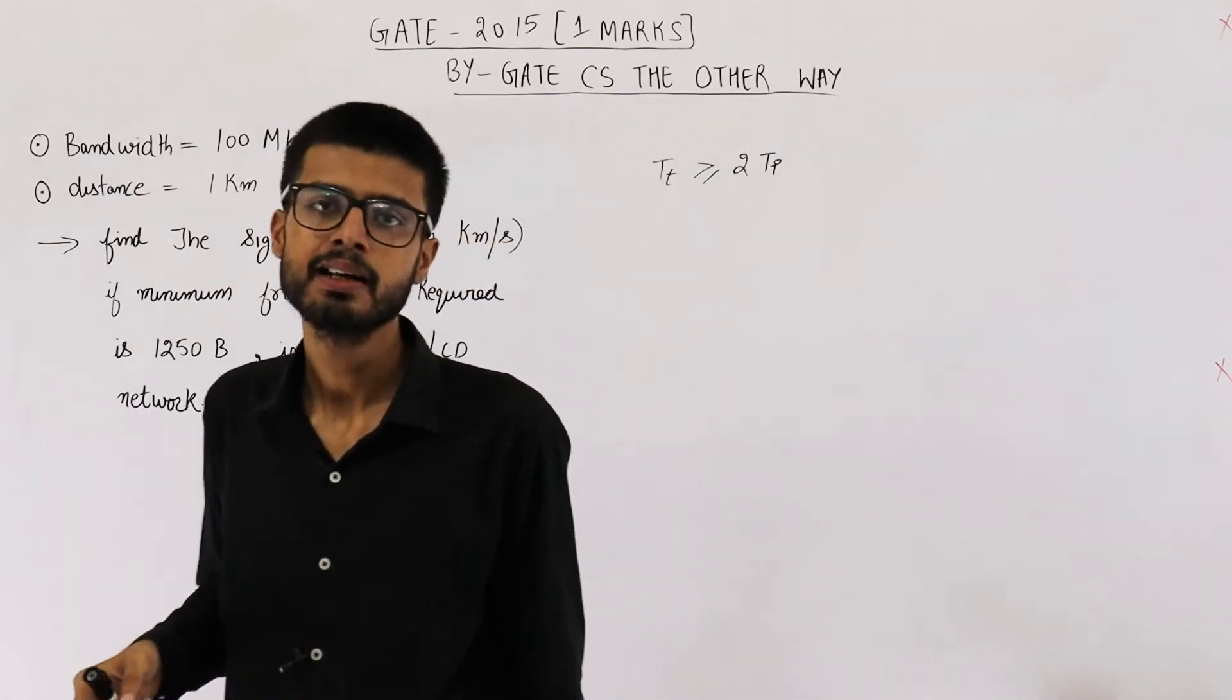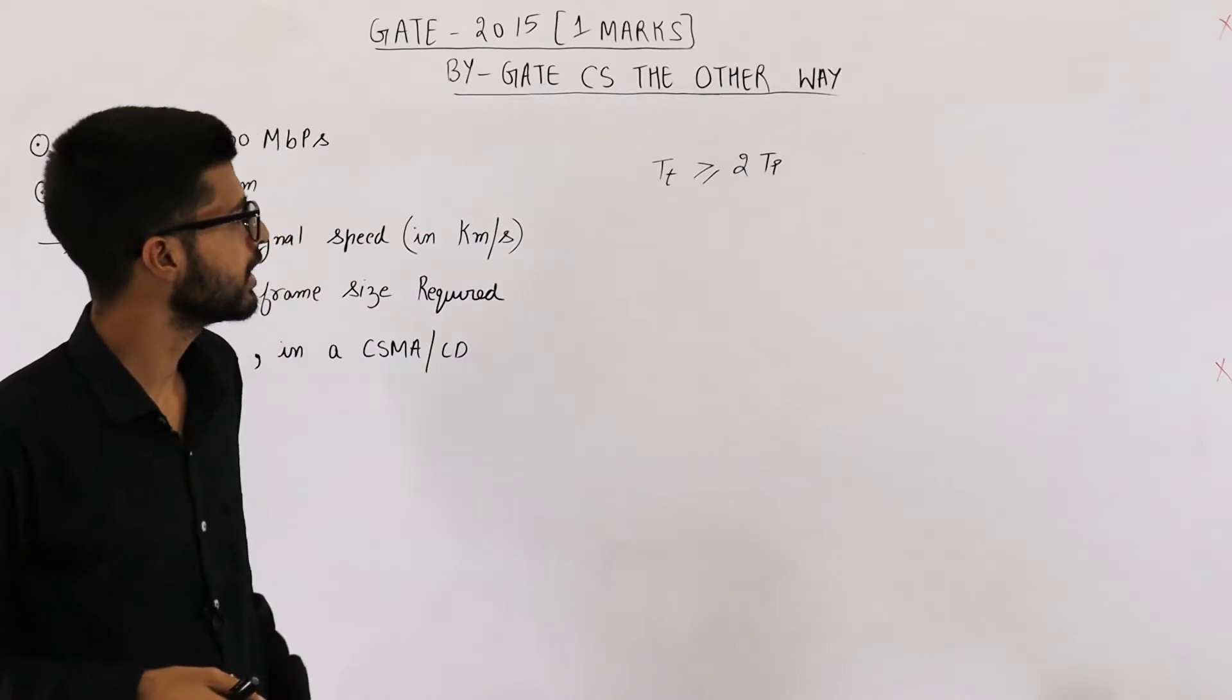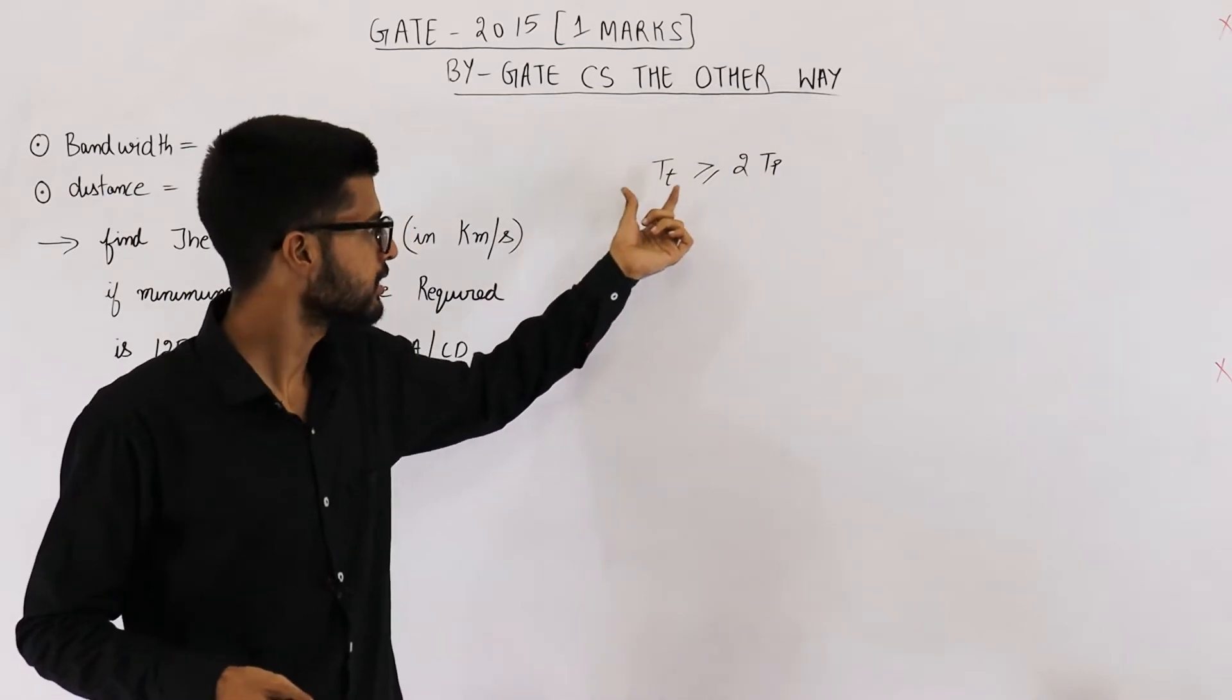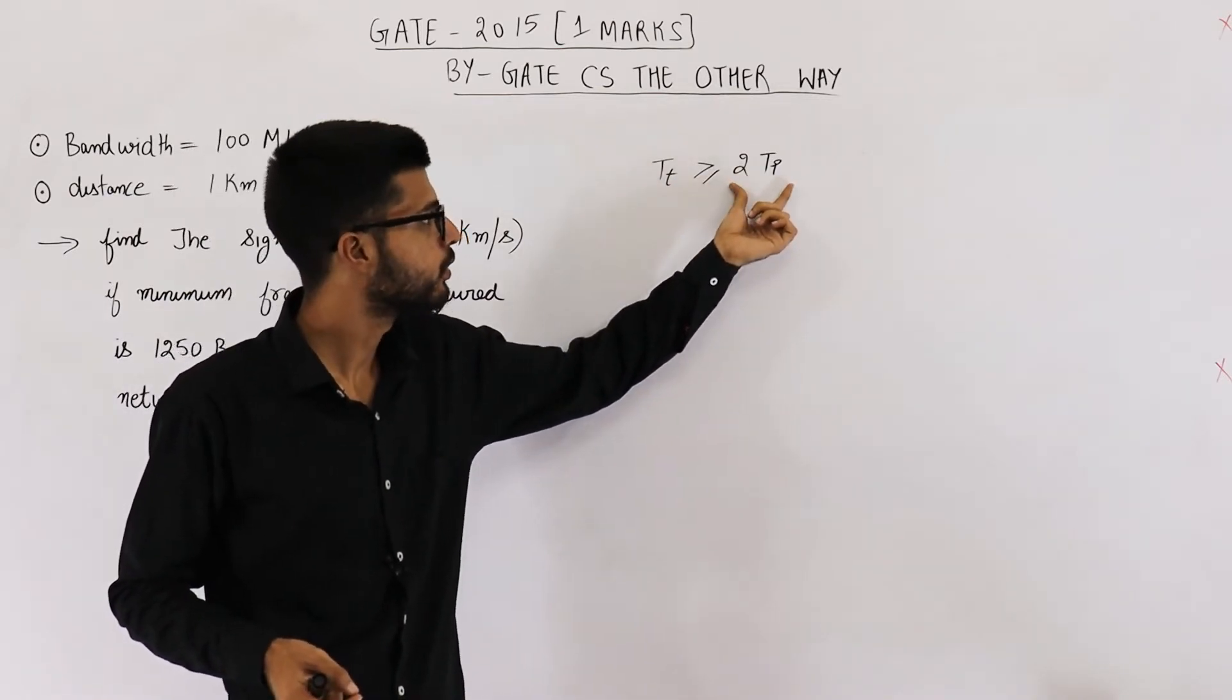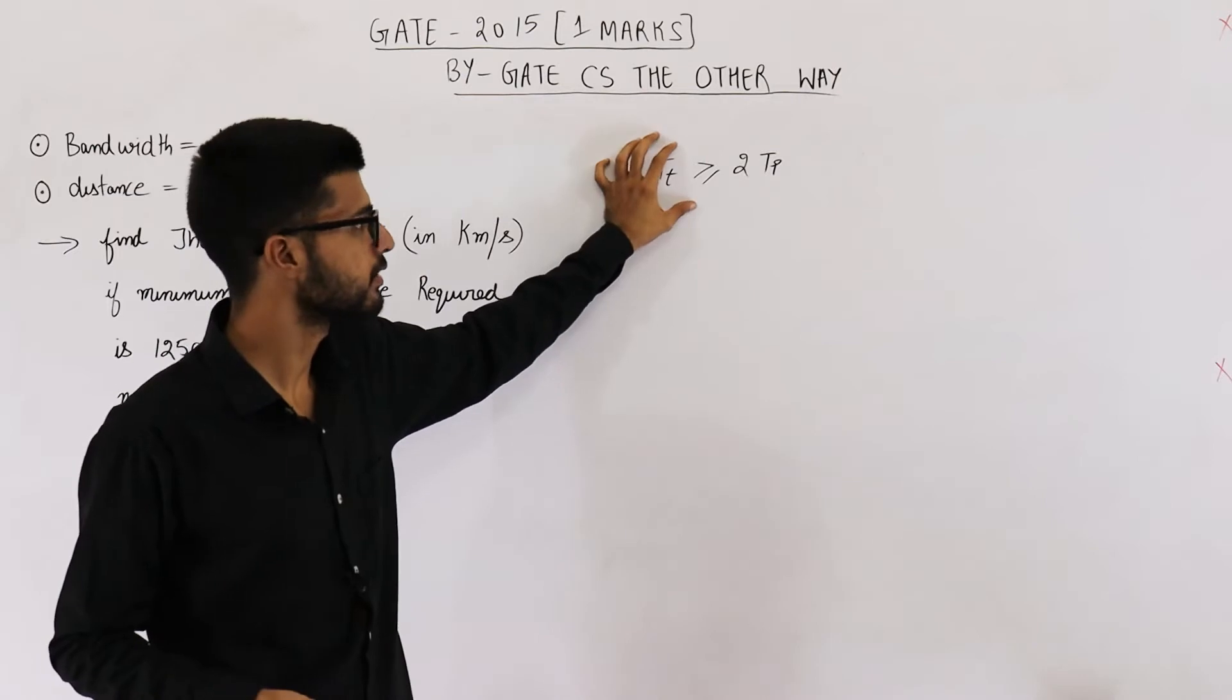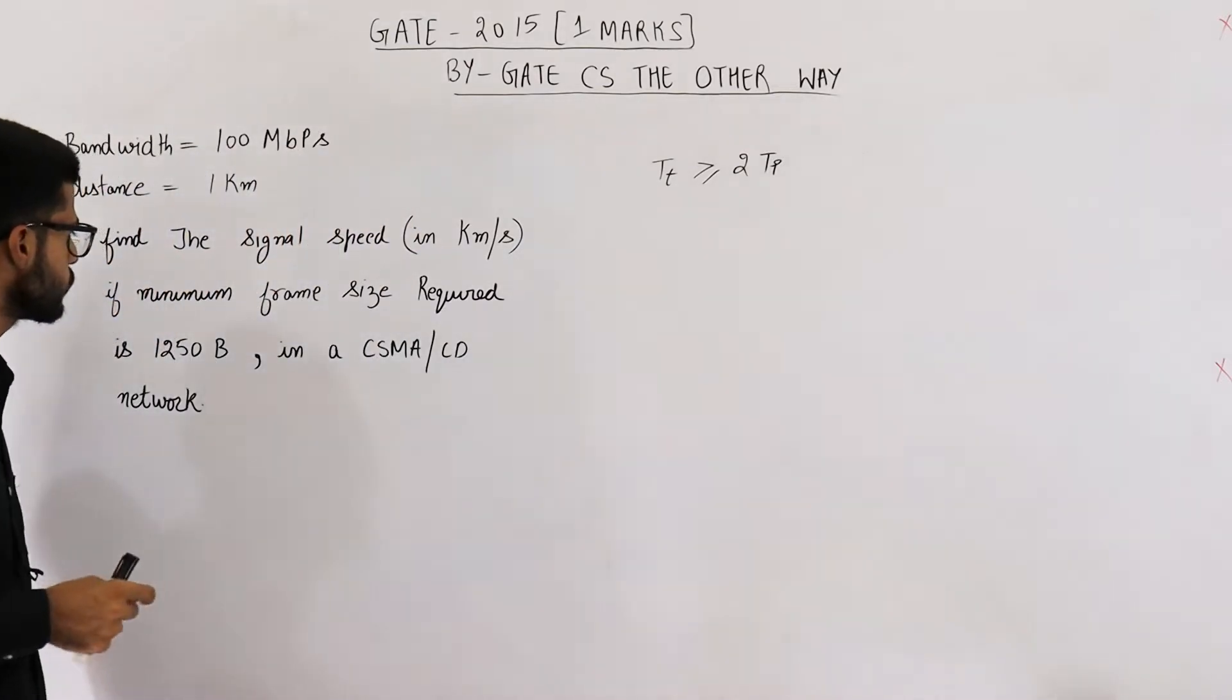Now you very well know that in a CSMA/CD network, for the purpose of collision detection, our aim is to keep on transmitting for at least 2 into TP seconds. That means transmission time must be greater than or equal to twice the propagation delay. So the minimum value that transmission time can take is this much. Transmission time's value must be greater than or equal to this.